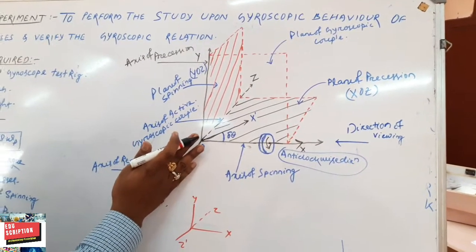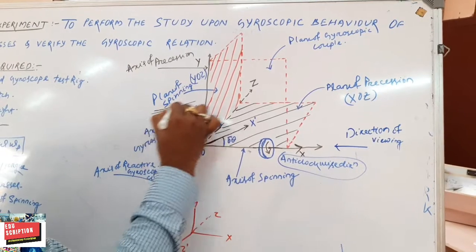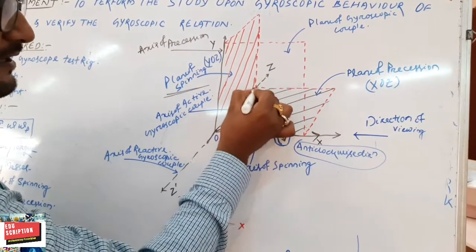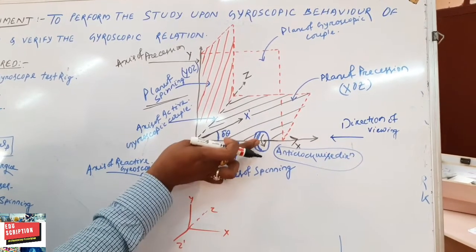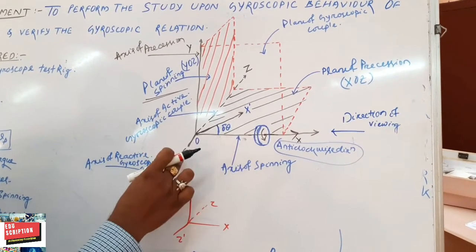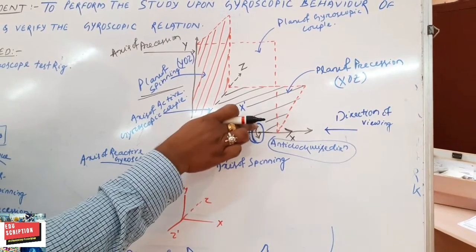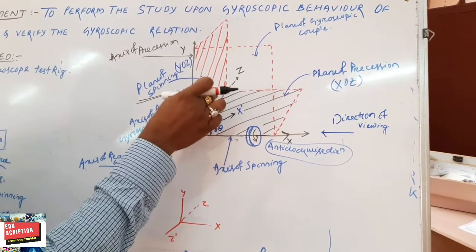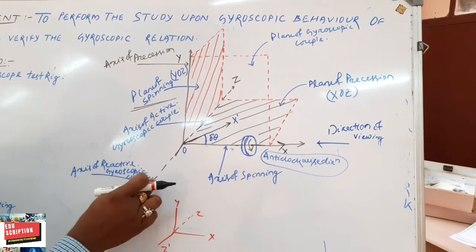The plane of any axis is the perpendicular plane to that axis. The y-o-z plane is known as the plane of spinning, and the x-o-z plane (perpendicular to the y-axis) is the plane of precession. The z-axis is termed as the axis of gyroscopic couple. If the rotating masses is moving in this direction, this is the active gyroscopic couple axis and this part is the axis of reactive gyroscopic couple. If the rotating masses precesses in the other direction, then that axis becomes the active gyroscopic couple axis and the other becomes the reactive gyroscopic couple axis.